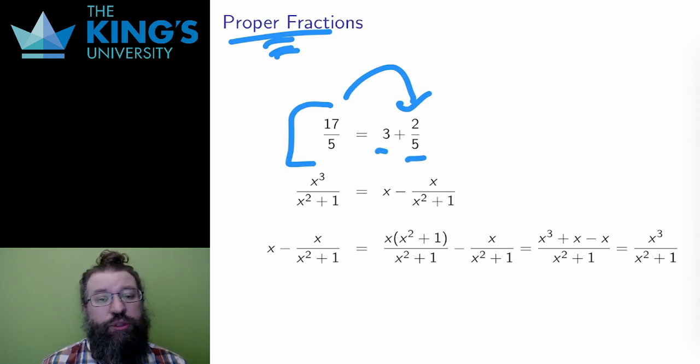Essentially, this is doing division with remainder. 17 divided by 5 is 3 with remainder 2. 3 whole number, and 2 leftover fifths.